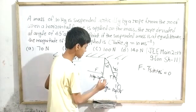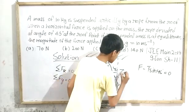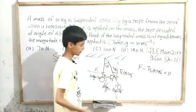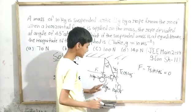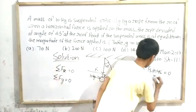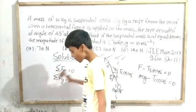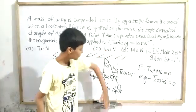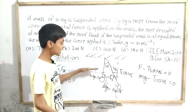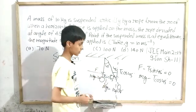For the vertical direction, sigma Fy equals zero. Since F is a totally horizontal force, its y-component is zero. So we have: T cos 45 degrees minus mg equals 0, which gives us mg equals T cos 45 degrees.